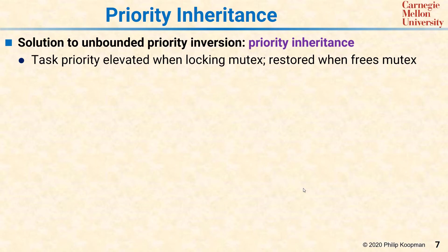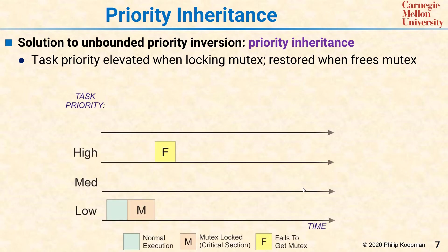Here's a picture to explain it. The setup is the same. We have a low priority task that grabs the mutex. We have a high priority task that wants the mutex but fails to get it because the low priority task already has it.